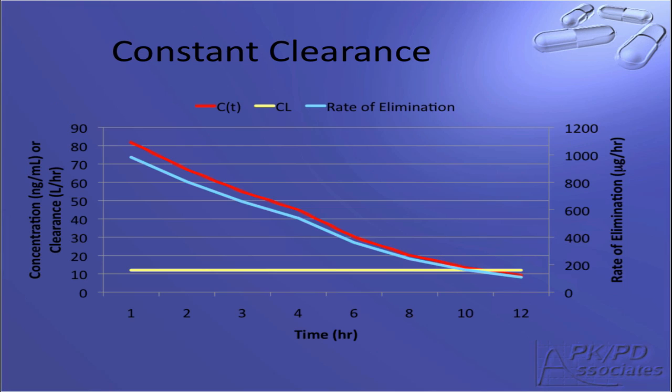This relationship can be illustrated with this graph. The red line represents the concentration of the drug in the body. The blue line represents the rate of drug elimination. And the yellow line is the clearance. Thus, clearance stays constant, while the rate of elimination changes as the amount of drug in the body changes.